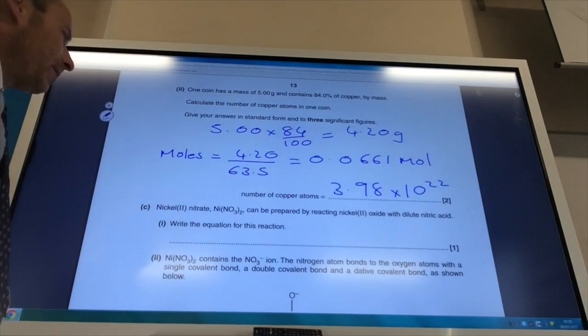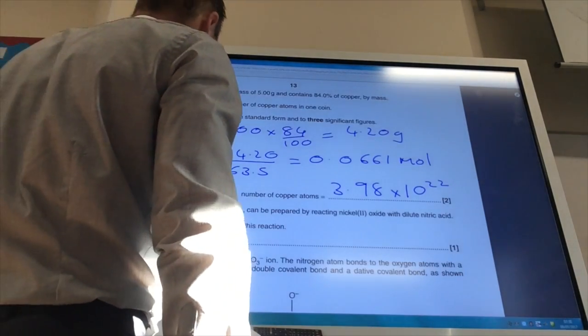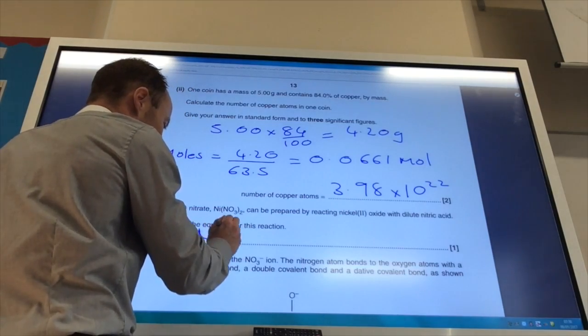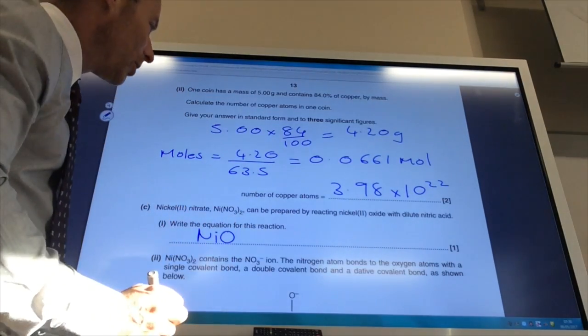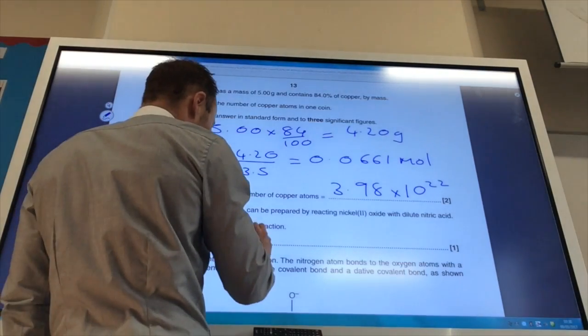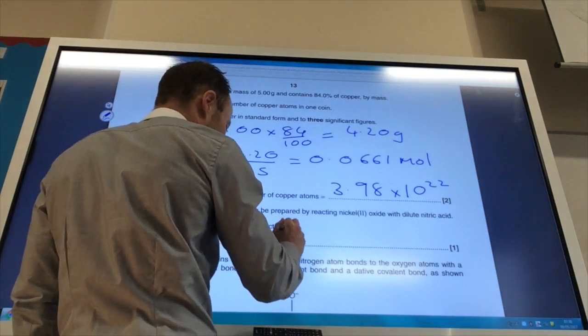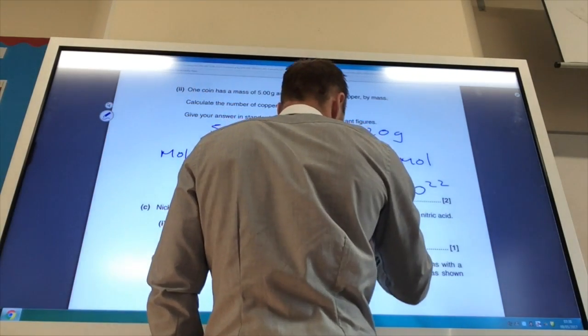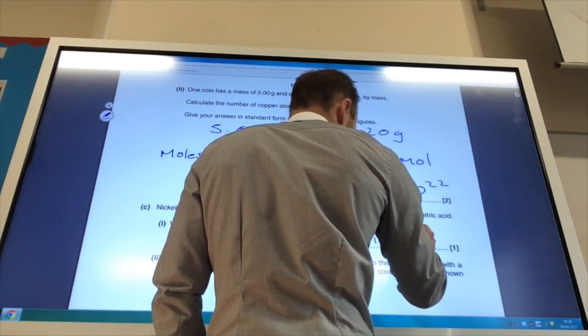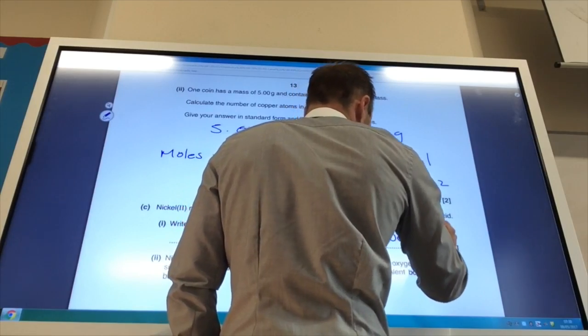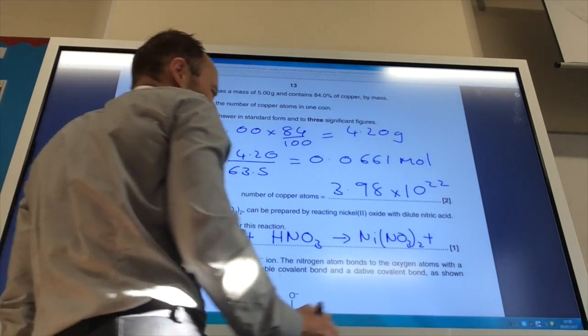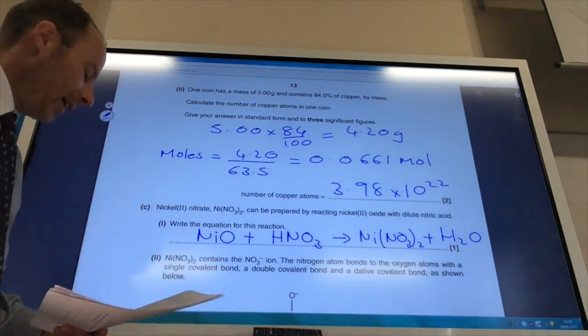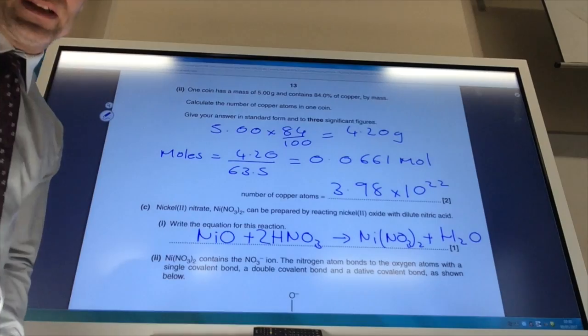Nickel 2 nitrate can be prepared by reacting nickel 2 oxide with dilute sulfuric acid. Give you the equation. Well, nickel 2 means it's 2+. So the formula of nickel 2 oxide is going to be NiO. Nitric acid is HNO3. They've given you, kindly, the formula of nickel nitrate, which is rather lovely of them. And then, of course, you need to know that it's a base plus an acid. So you're going to need water. So plus H2O there. And to balance it up, you need a 2 there.